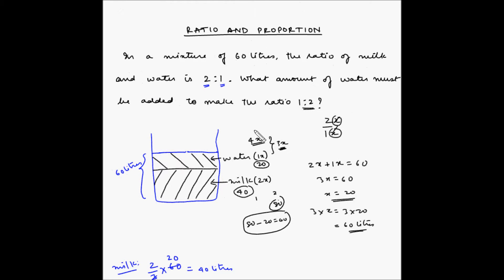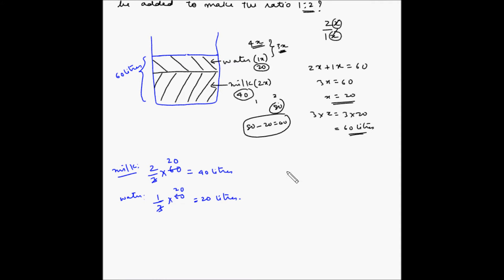Now, we want to make the ratio of milk to water as 1 is to 2. So, the ratio of milk to water now is 40 divided by 20 divided by 20. This is milk to water ratio. Now, we have to add water. So, let us say we are adding x liters of water and this ratio should become 1 by 2.